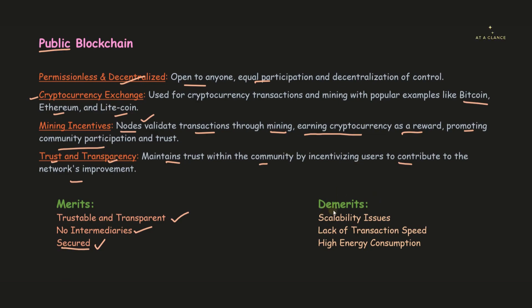When it comes to demerits, public blockchain has a scalability issue — adding many nodes requires a lot of computational power and is expensive. The transaction speed is also very low because many nodes must validate each transaction. In the proof-of-work consensus algorithm, it takes 10 minutes for a single block to be added to the blockchain network. It also requires high energy consumption overall.